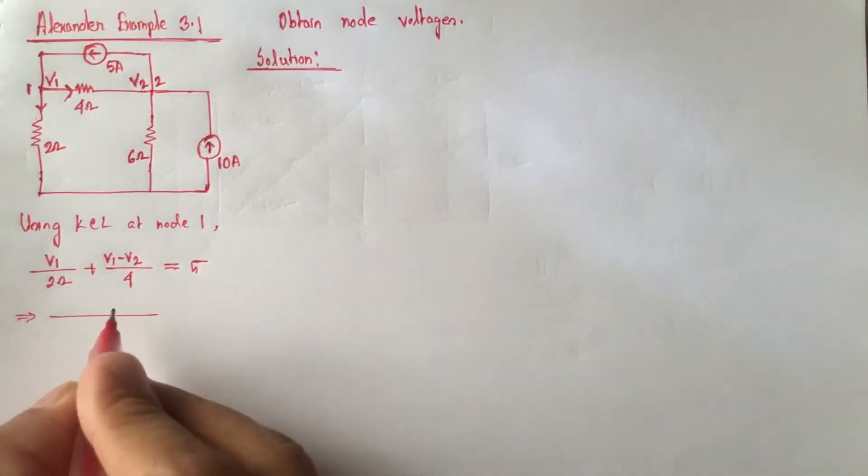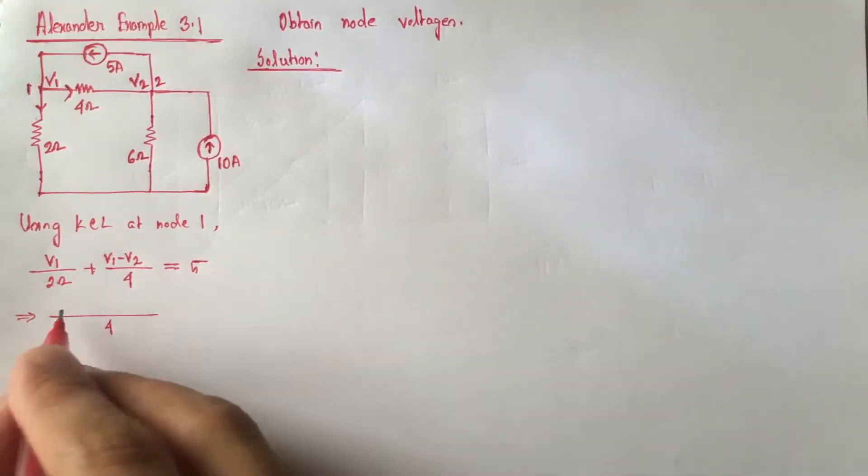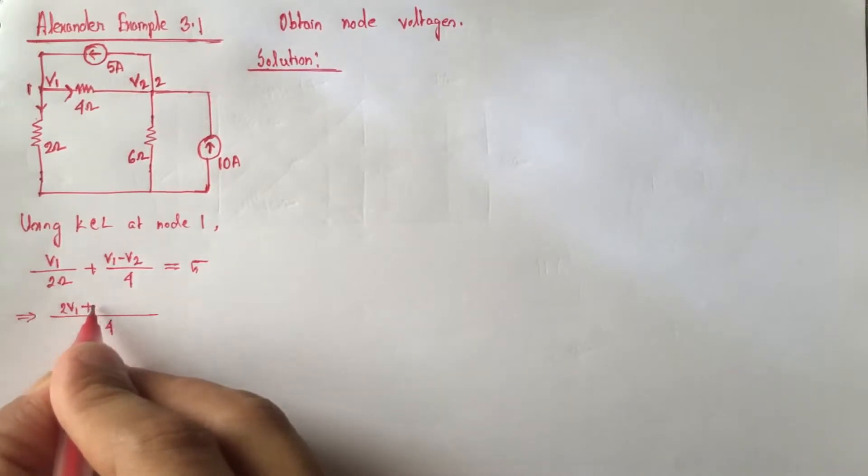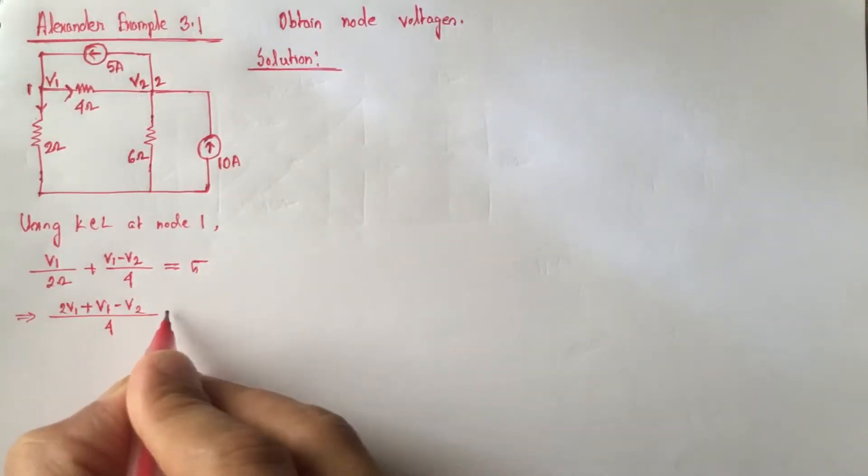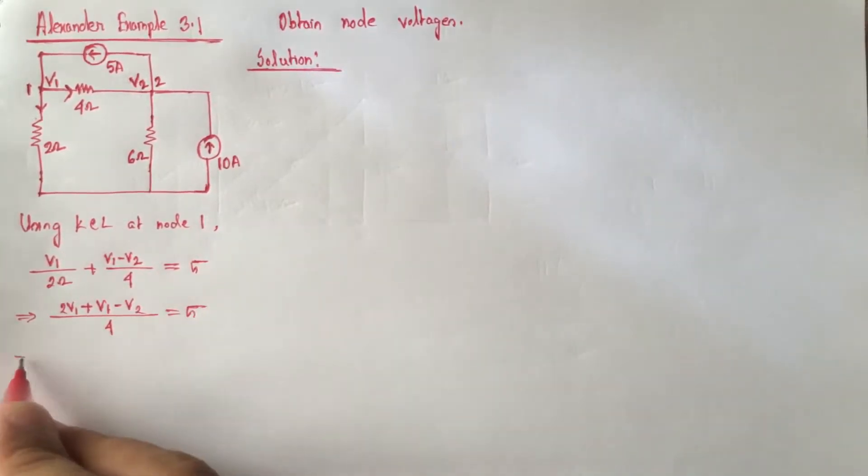Now simplifying the equation, V1 by 2 plus V1 minus V2 by 4 is equal to 5, that is 3V1 minus V2 is equal to 20. This is equation 1.